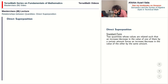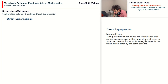Direct superposition problems are problems where there are two quantities whose values are related such that if the value of one of them increases or decreases by a certain amount, the value of the other quantity also increases or decreases by the same amount. So for example, if the value of one quantity goes up by two, the other goes up by two as well, and if one goes down by five, the other also goes down by five. So they both increase or decrease by the same amount.